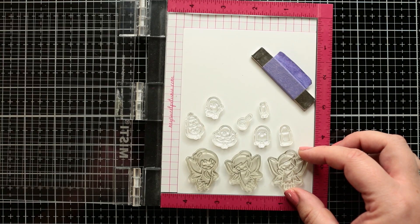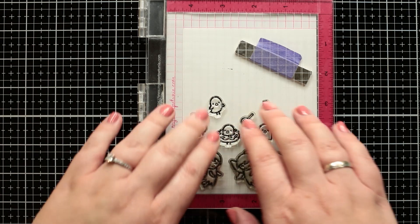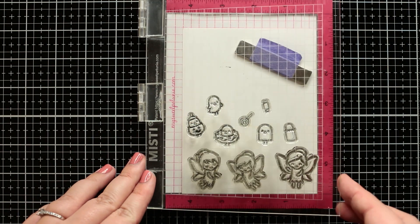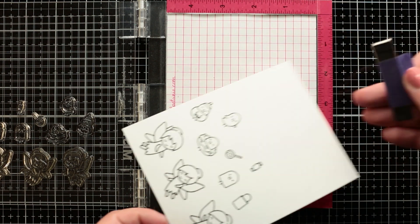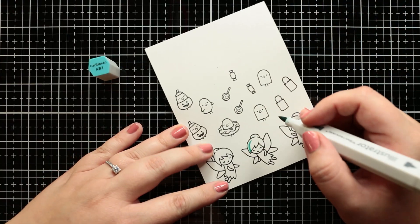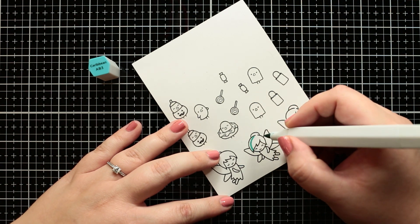Now I'm going to stamp some images with my Misti using black ink with the Fairy Friends and the Fox Costumes Before and After stamp sets by Lawn Fawn. Now I'm showing you how I colored these fairies.